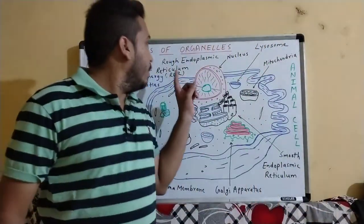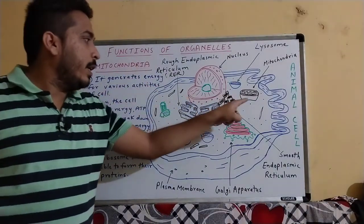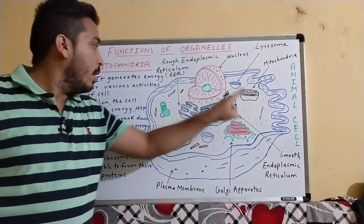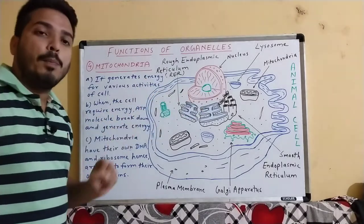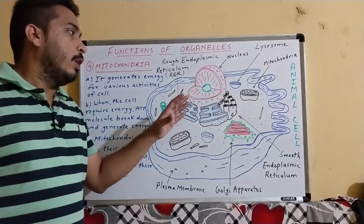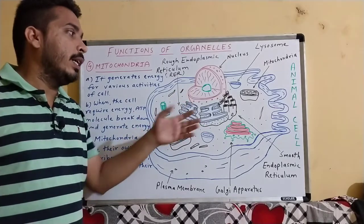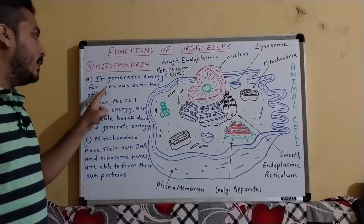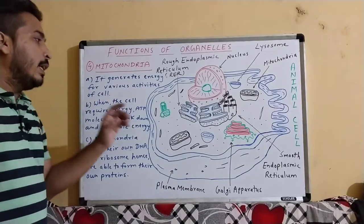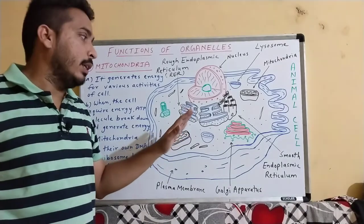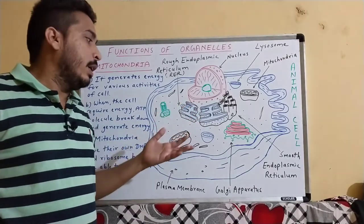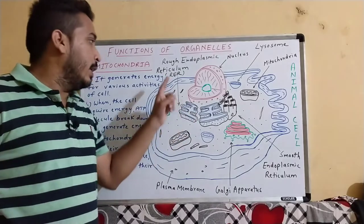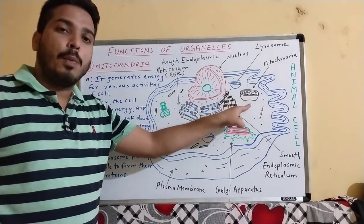Our next cell organelle is mitochondria, which is also called the powerhouse of the cell because it provides energy to the cell. Its first function is it generates energy for various activities of the cell, such as cell division, protein formation, and substance transportation. When the cell requires energy, ATP molecules break down and generate energy. ATP stands for adenosine triphosphate.